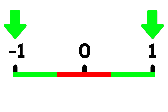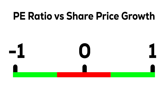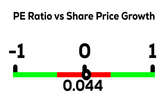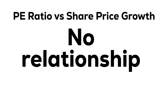So if there were a strong relationship between low P/E ratios and high growth rate over the following 5 years, you might expect a correlation coefficient of something like minus 0.4, meaning companies with lower P/E ratios tend to see their share price grow. But when I calculated the correlation of P/E ratio to growth for those 100 companies, I got a correlation coefficient of 0.044 — so close to 0 that it means there was absolutely no relationship between the P/E ratio of the US's top 100 stocks in 2019 and their following 5-year share price growth. None at all.